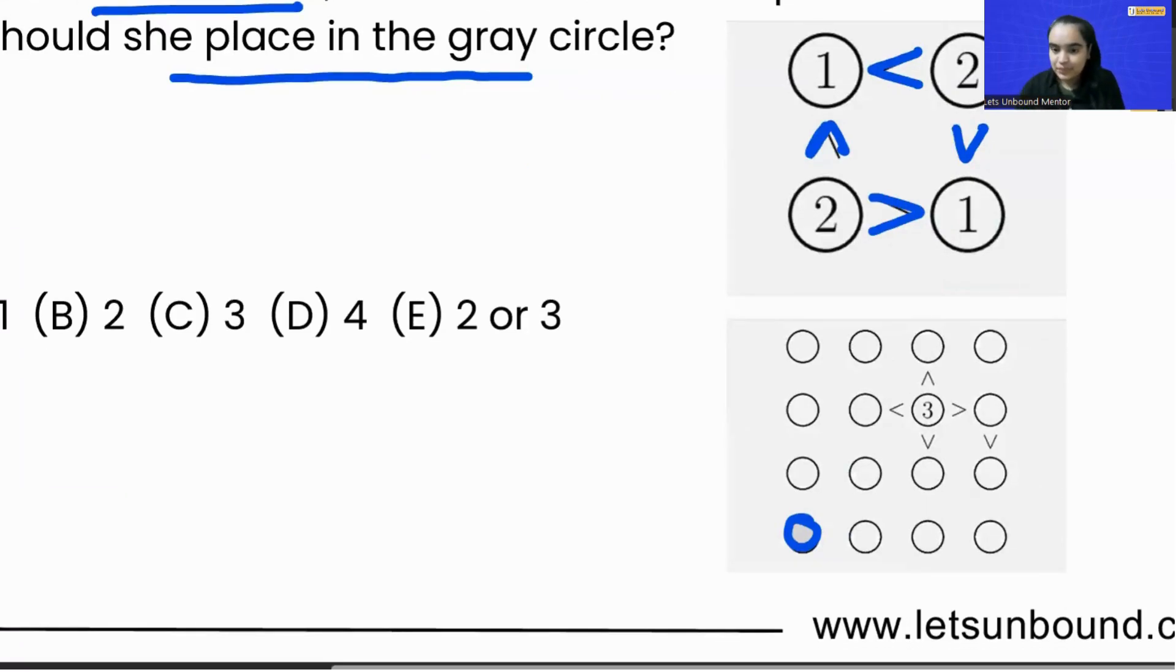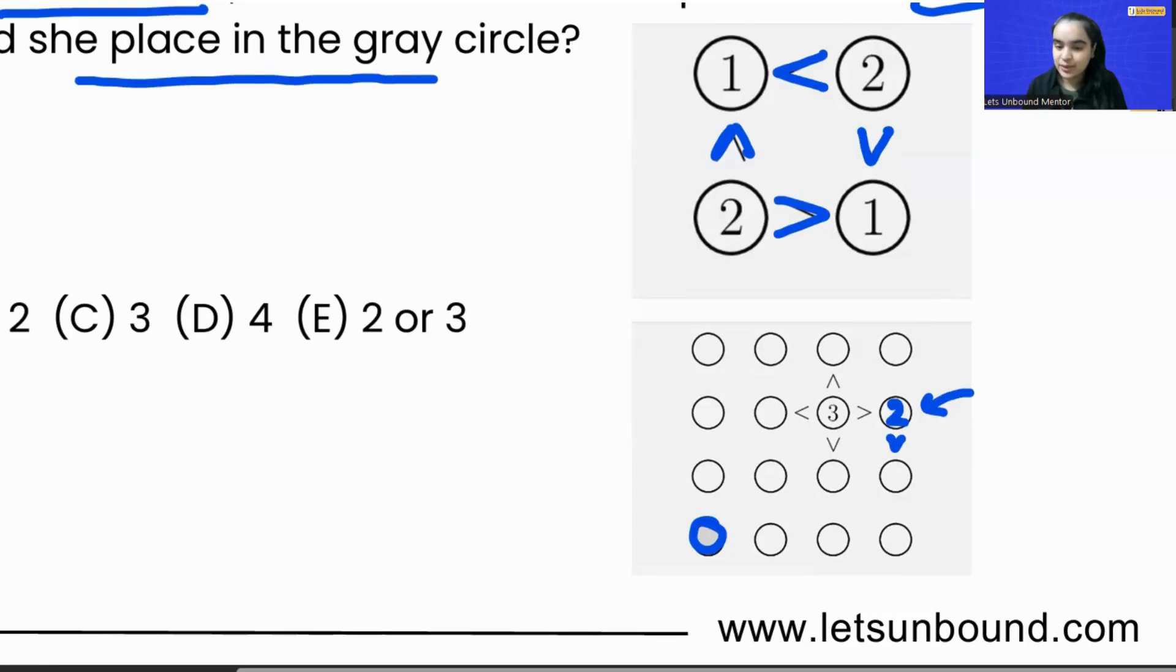So over here, if you see, they have given us one hint: that 3 is greater than all the numbers. And we need to put in a number over here so that it is greater than a different number, right? So we know that 2 can only come over here, right?